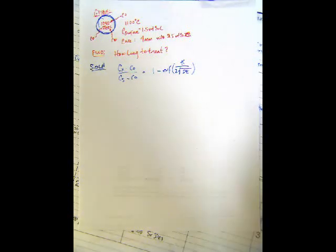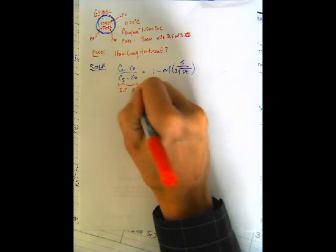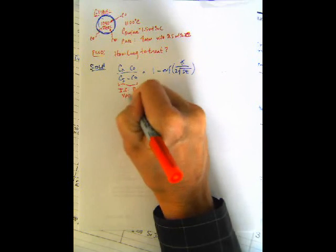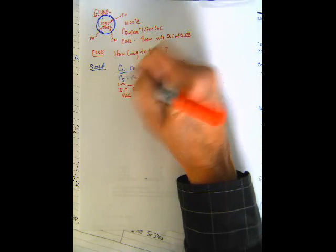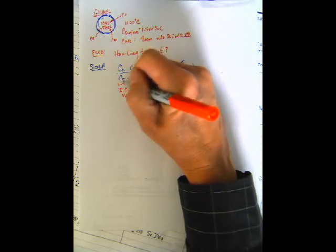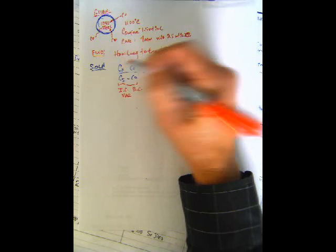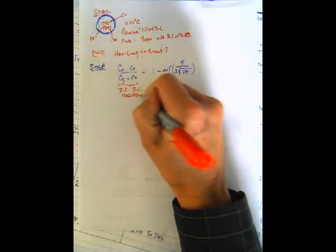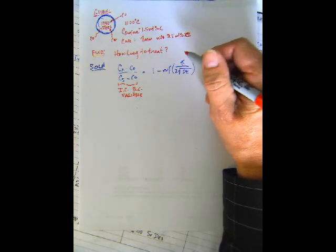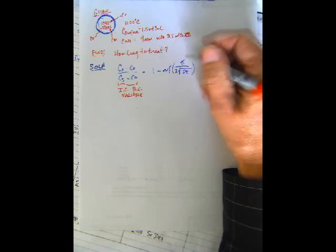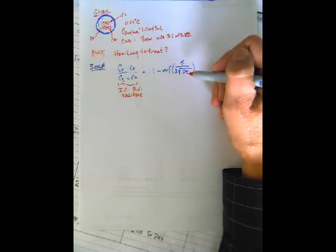This is a solution to a differential equation. You want to recognize that on this side you have initial conditions, boundary conditions, and your variable. C0 is your concentration in the part at time zero, that's an initial condition. Cs is the concentration at the surface of the part, a boundary condition. And Cx is your variable, the concentration at some position x. That's a function of this erf thingy, which is a messy function that you do not have in your calculator. And the position in the part, diffusivity, and how long it's cooking time.